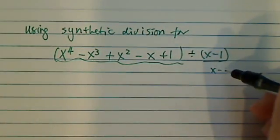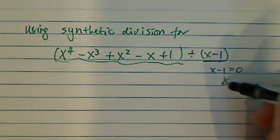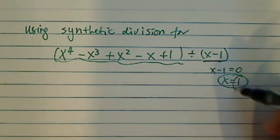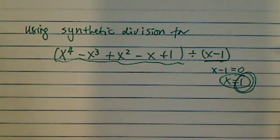For that reason, we need to solve for x minus 1 equal to 0, so x equal to 1. We put this 1 as the number, so for that reason, it looks like we're flipping this minus 1.